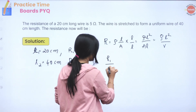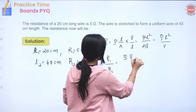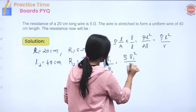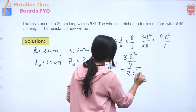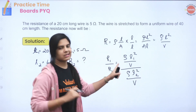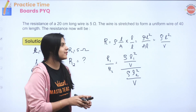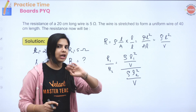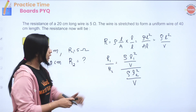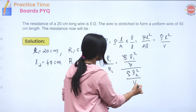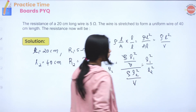So we take the ratio R1/R2. R1 equals ρL1² divided by volume V, and R2 equals ρL2² divided by V. Because we use the same wire, the volume is constant. The ρ and V cancel, giving R1/R2 = L1² / L2².